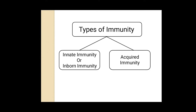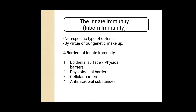Immunity is divided into two categories: innate immunity and acquired immunity. Let's start with innate immunity. This is the type of immune response that we have since birth, so it is also called inborn immunity. It is due to our genetic makeup and it provides four barriers to keep the pathogen away from your body: the first is the epithelial surface, second is the physiological barrier, third is the cellular barrier, and fourth is antimicrobial substances.